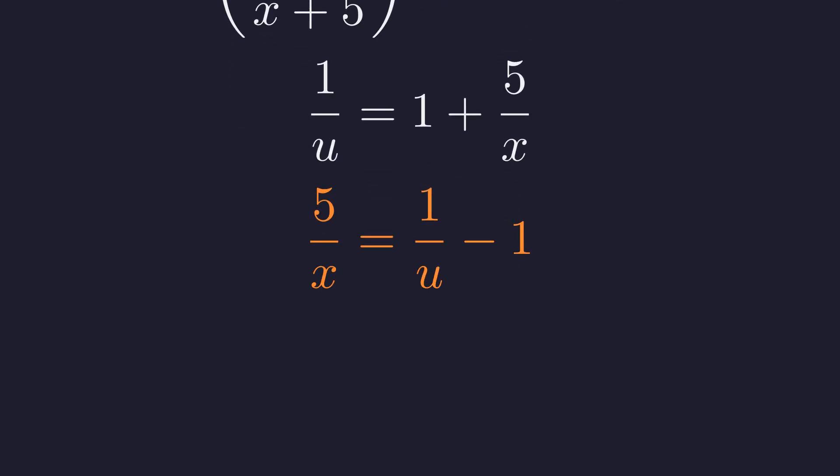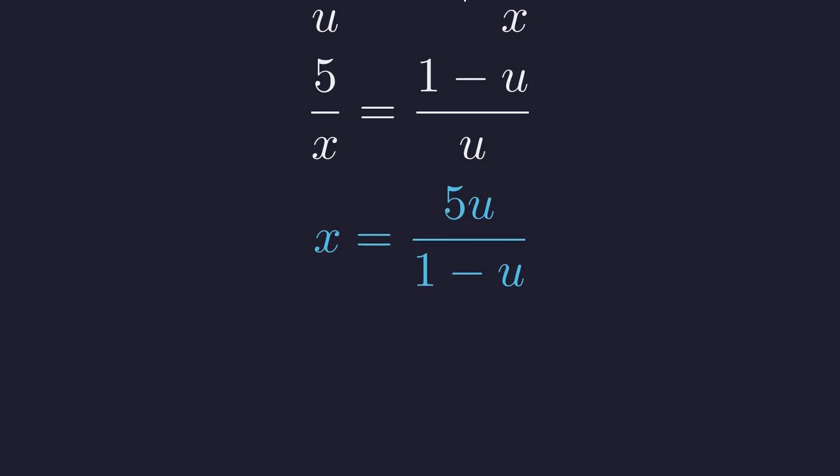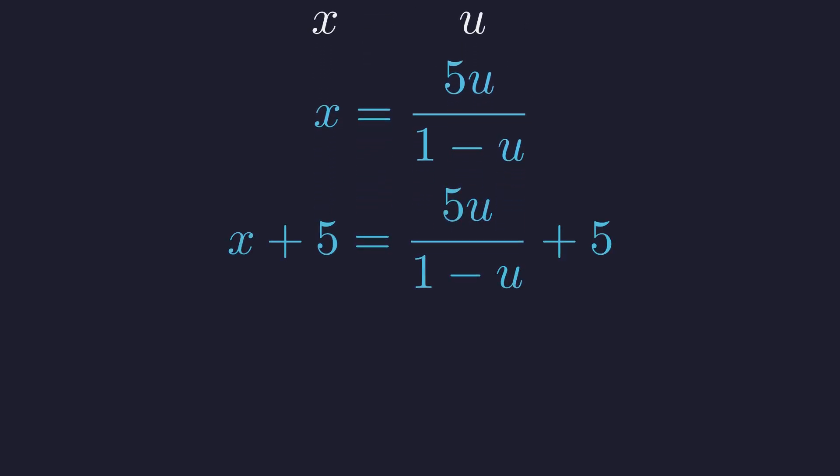Rearranging the terms allows us to isolate the term 5 over x. Combining the right side gives us 1 minus u all over u. Solving for x yields 5u divided by the quantity 1 minus u. Now we construct the full exponent by adding 5 to this expression.